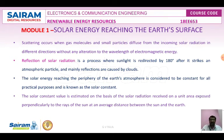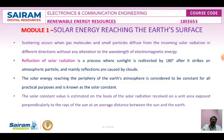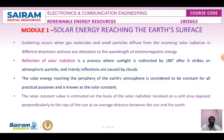Reflection of radiation is the process where sunlight is redirected by 180 degrees after it strikes an atmospheric particle. The radiation intensity on the surface of the Sun is approximately 6.33 × 10⁷. The solar energy reaching the Earth's atmosphere is considered to be constant for all practical purposes — we call it the solar constant. It is very difficult to achieve an accurate measurement of the exact value of the solar constant.